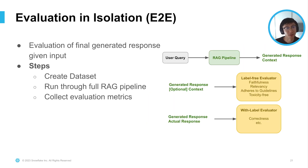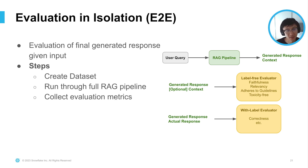You can also evaluate end-to-end — the final generator response given the input. Given a user query, run it through your entire RAG pipeline, get back a generated response, and collect some metrics. The steps are roughly similar: you create a dataset — it could be human-annotated or synthetically generated — run it through the full RAG pipeline, and collect evaluation metrics. This includes metrics like correctness, faithfulness, and relevancy. Some require labels and some don't.